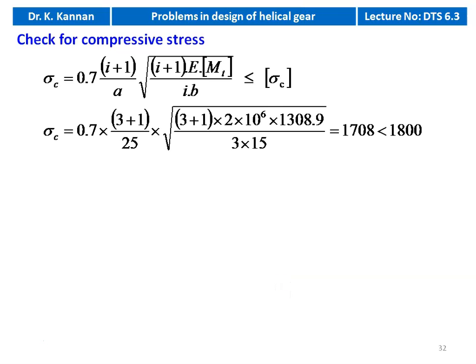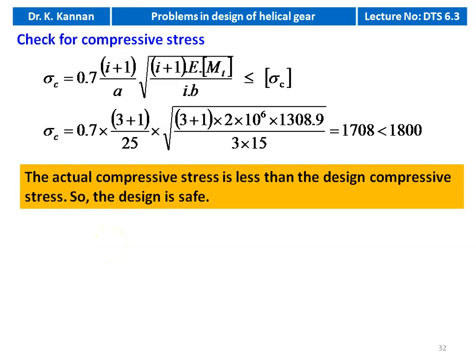Checking compressive stress: σC = 0.7 × (i+1)/A × √[(i+1) × E × MT / (i × B)] = 0.7 × (3+1)/25 × √[(3+1) × 2×10⁶ × 1308.9 / (3 × 15)] = 1708 kgf/cm², which is less than the design compressive stress of 1800 kgf/cm². The actual compressive stress is less than the design compressive stress, so the design is safe.